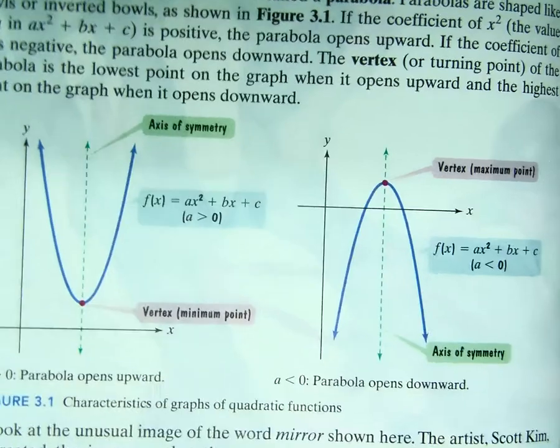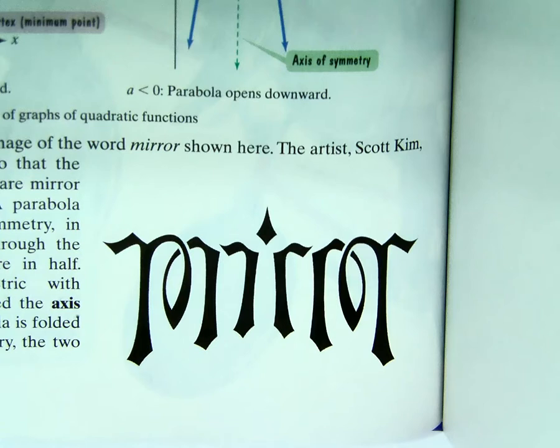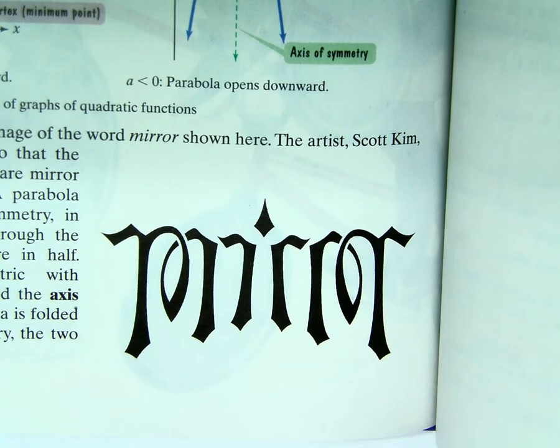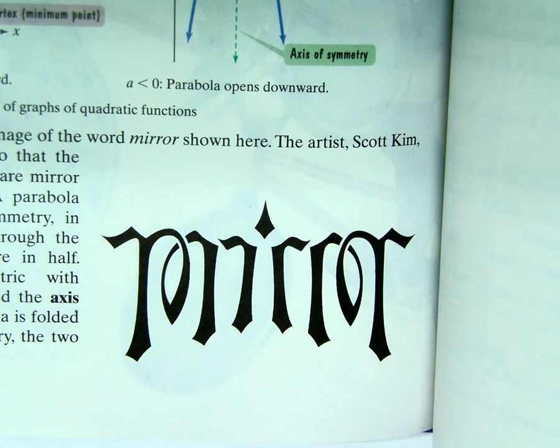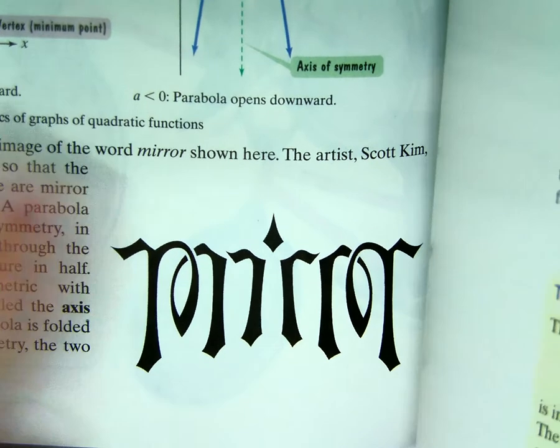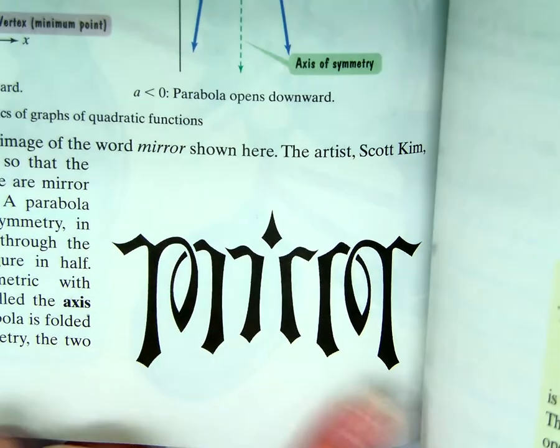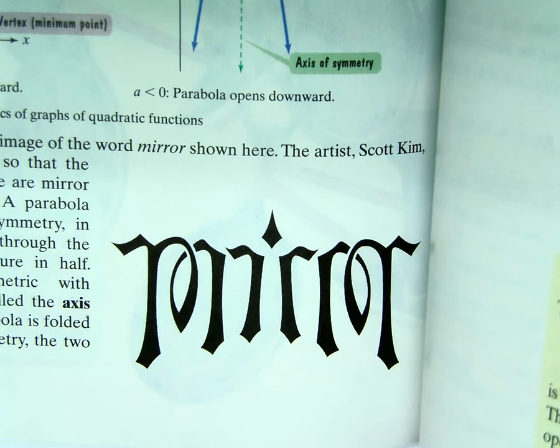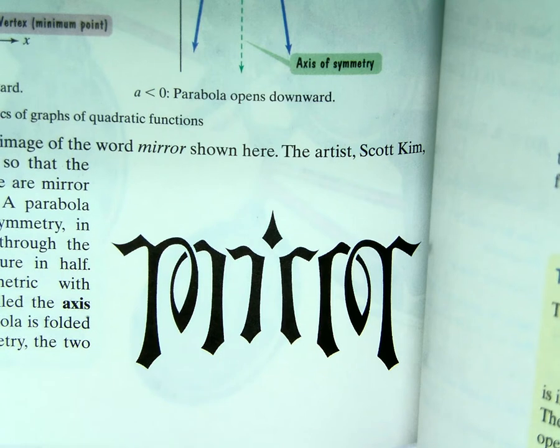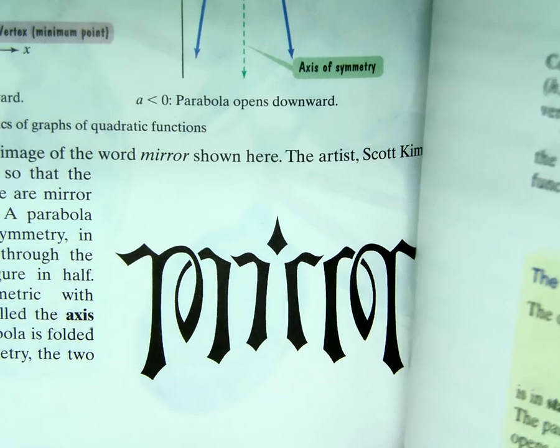I think this is pretty cool. I don't know if you can see it very well or not. It's talking about symmetry. Here, and if you actually draw a line right here, mirror actually is a mirror of itself. I think that's pretty cool. I just wanted to show you too.